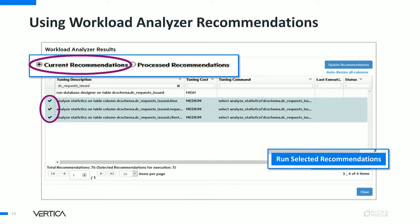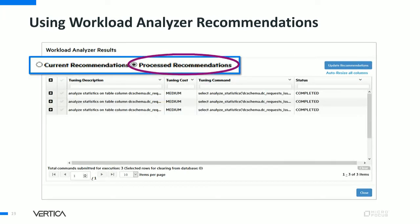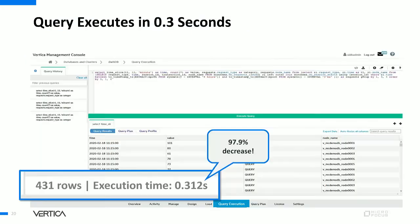Once the recommendations are run successfully, you can view all processed recommendations. We see the three recommendations we selected have successfully processed. Now we run the same query again via query execution on MC, and it runs much faster — only 0.3 seconds, which is about a 98% decrease from the original runtime. Using the Workload Analyzer tool on MC, you can potentially triage and solve issues for queries that are taking too long to execute.